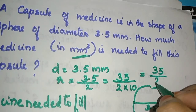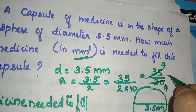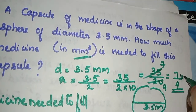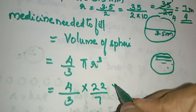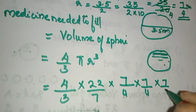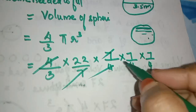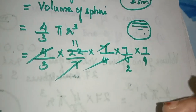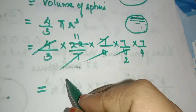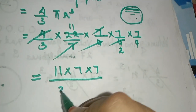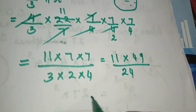35 divided by 20: 5 cuts into 35 giving 7, and 5 cuts into 20 giving 4. So the radius is 7 by 4 mm. Now we calculate: 4 by 3 into 22 by 7 into 7 by 4, cubed. Cancelling 7 by 7 and simplifying gives 11 into 49 by 3, which is 539 by 24.